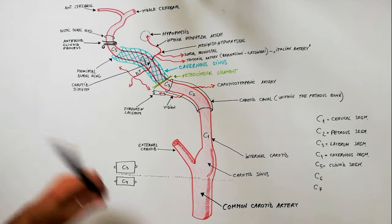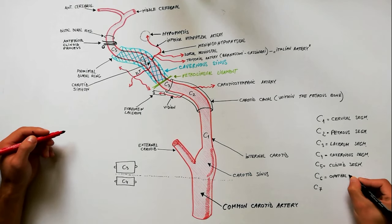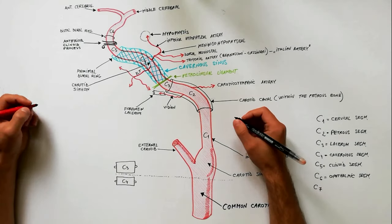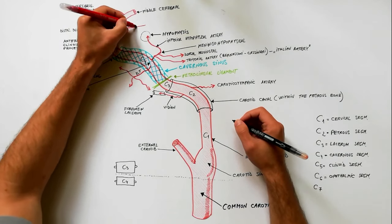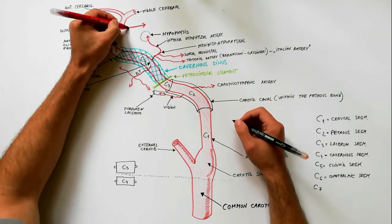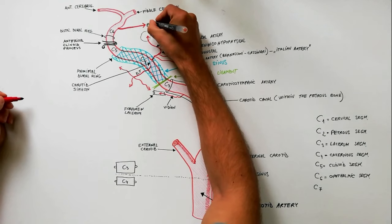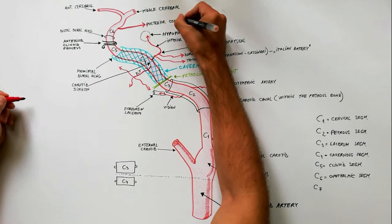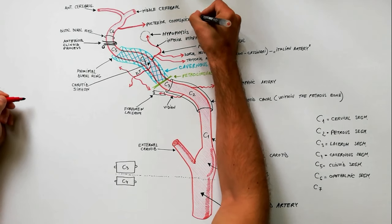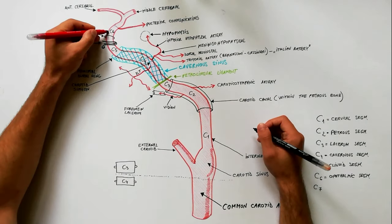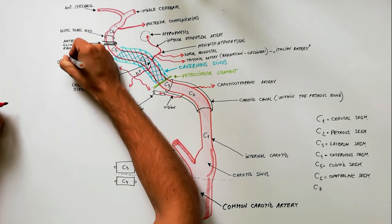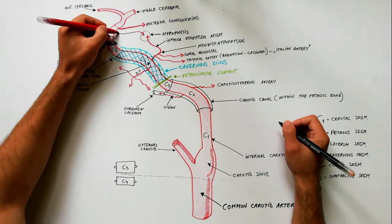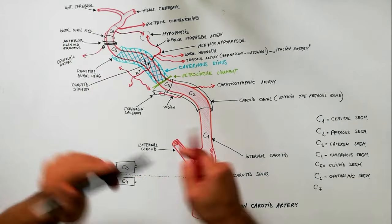The C6 segment, or the ophthalmic segment, extends from the distal dural ring to the origin of the posterior communicating artery. The branches of the ophthalmic segment are the ophthalmic artery and the superior hypophysial artery.